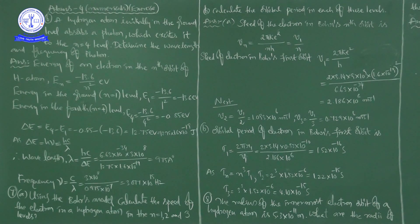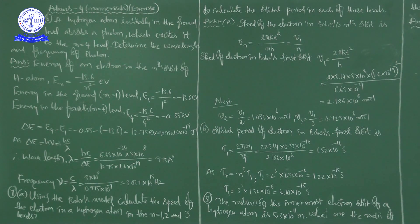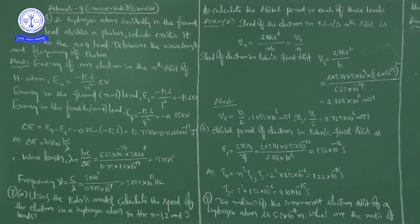According to Bohr's theory, there is information about stationary orbits. When an electron is revolving in one stationary orbit, it does not emit energy and it does not absorb energy — the energy of the orbit is constant. This is the meaning of a stationary orbit, which we already studied in atomic structure.